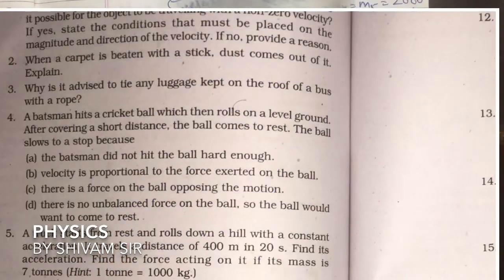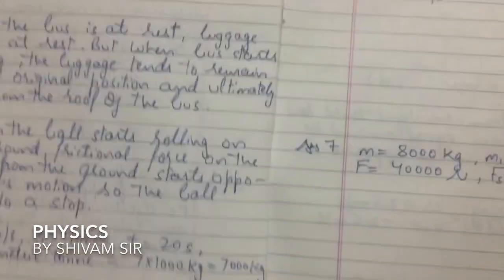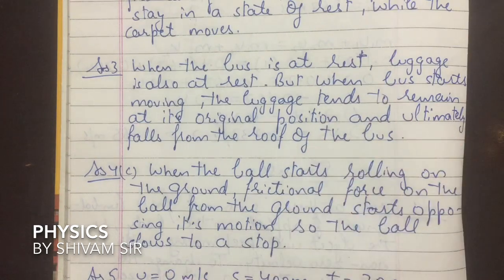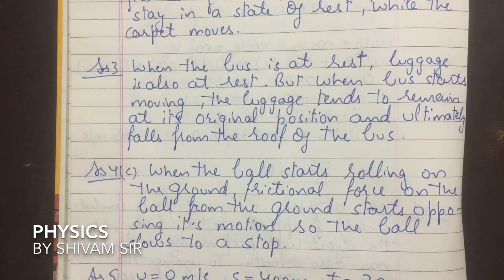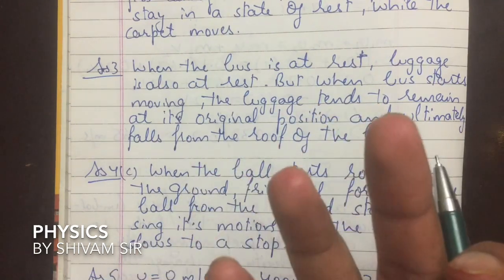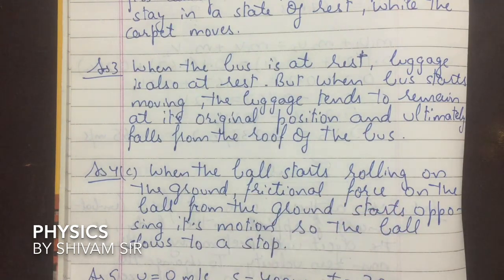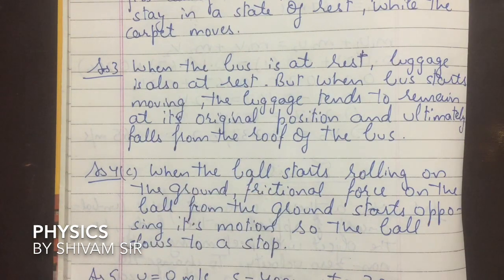Next question: Why is it advised to tie any luggage kept on the roof of the bus with a rope? This is again by Newton's first law of motion. When the bus is at rest, the luggage is also at rest. But when the bus starts moving, the luggage still tends to remain at rest due to its inertia, so a jerk is experienced. The luggage tends to remain at its original position and ultimately falls from the roof, so it is advised to tie it with a rope.